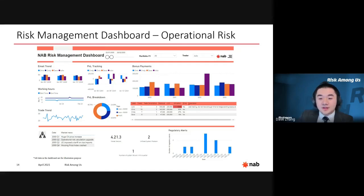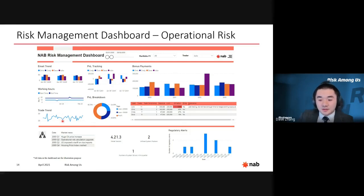The operational risk management dashboard enables NAB's risk management head to view the complete risk exposure for the currency options trading desk in a single consolidated report, analyzing risk posture efficiently. This dashboard is separated by a red line: above are internal control factors, below are business environment factors. For internal control factors, email trend, working hours, and trade trend show the trading behavior for each trader. P&L tracking and breakdown generate the trading P&L from each trader and provide the proportions of profits and losses. Bonus payment shows the pattern for each trader over the past four years, and the table below shows daily detailed information including number of trade cancellations, exposure, and limit breaches with explanations.